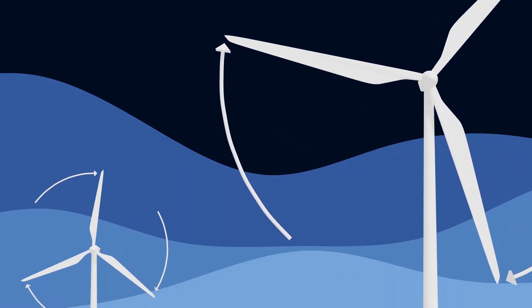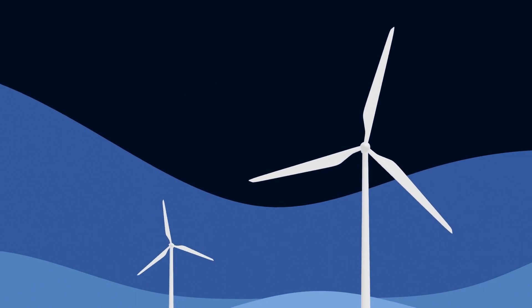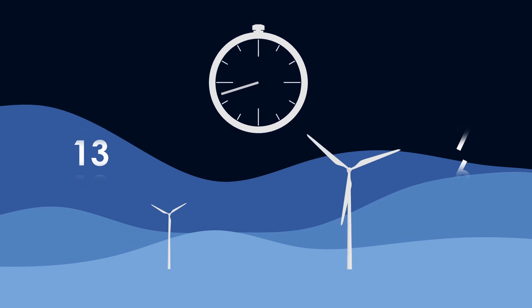The rotational speed depends on the blade size, which determines the radius. With larger turbines, the blade tip has to cover a greater distance in one revolution. Therefore, smaller ones rotate about 15 times per minute, and larger ones only about 7.5 times per minute.